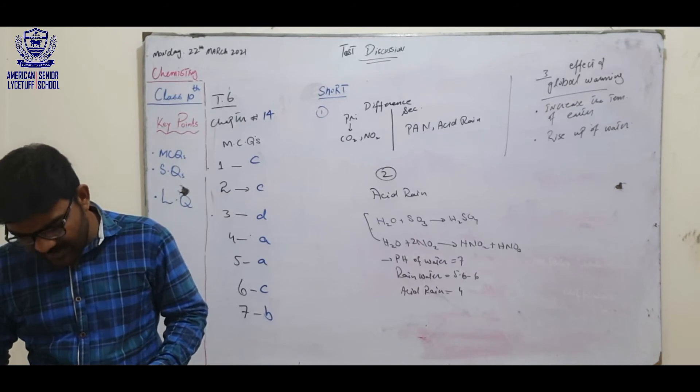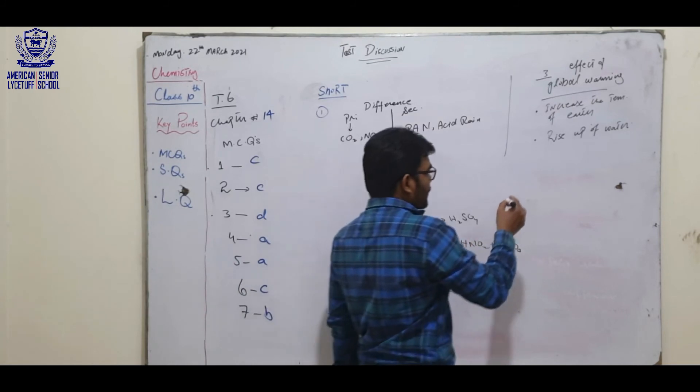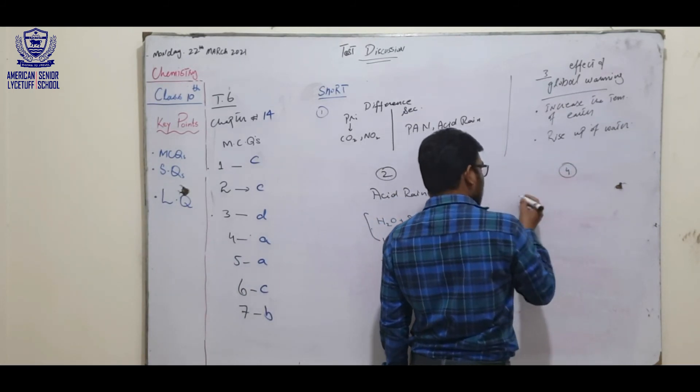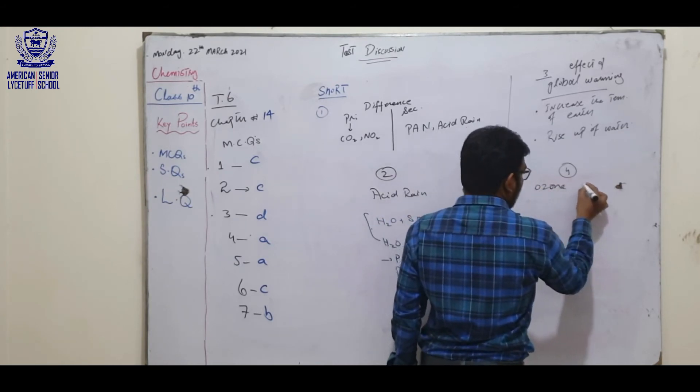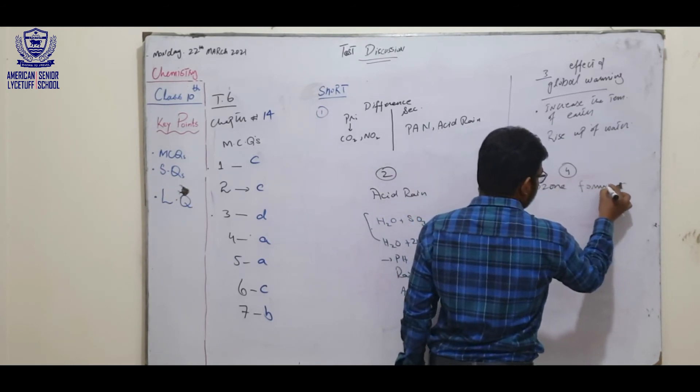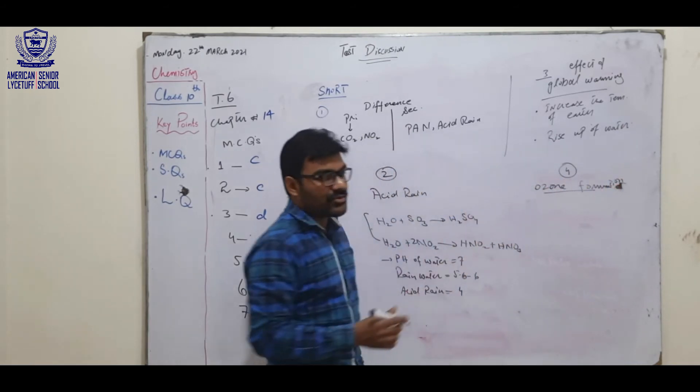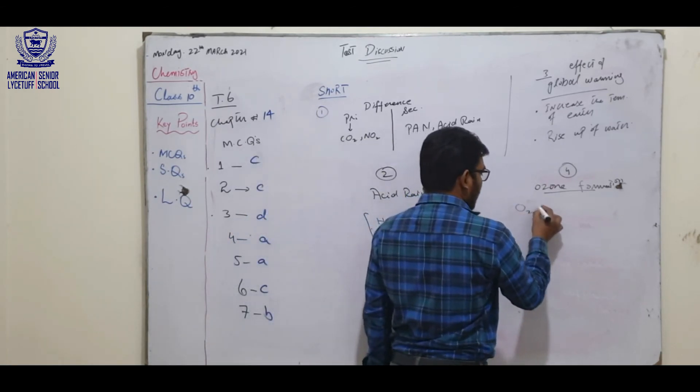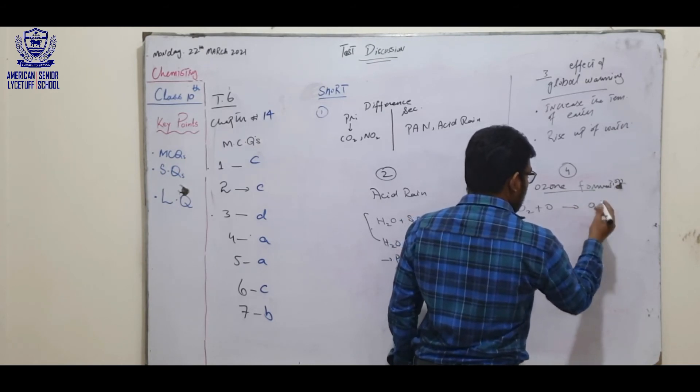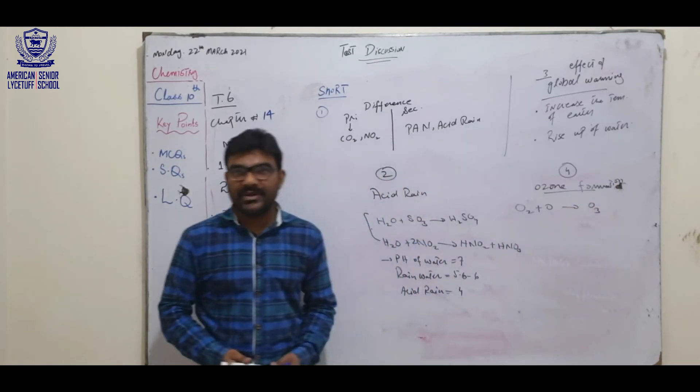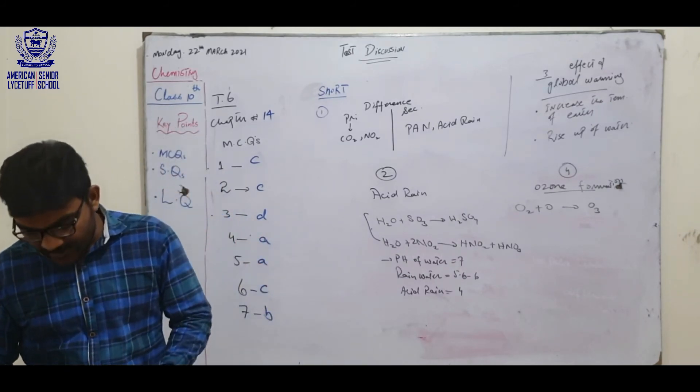How ozone is formed in stratosphere? Question number 4. Ozone in stratosphere forms this way. You write in the mid of stratosphere, ozone formation. In the mid of stratosphere, oxygen molecule combines with atomic oxygen to form O3, ozone. And this reaction takes place in the mid of stratosphere. This answer is given to the stratosphere. Next.